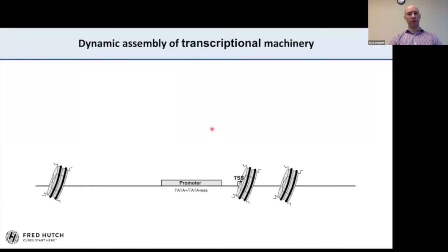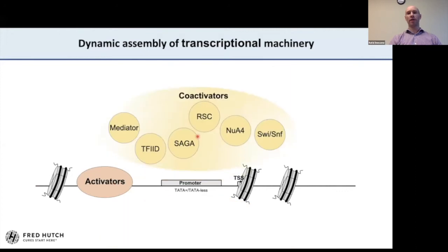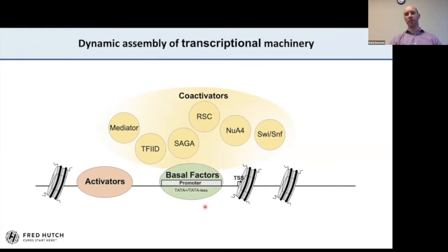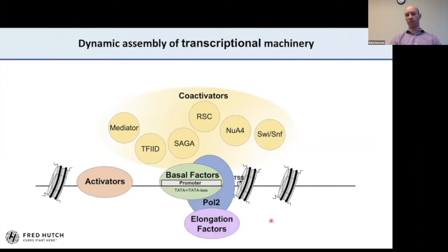Just a few introductory slides. Transcription in eukaryotes starts with activators which bind to upstream activating sequences. They usually recruit coactivator complexes, which can have multiple roles: they can remodel chromatin, introduce post-translational modifications, or nucleate the assembly of the pre-initiation complex. With the help of coactivators, basal factors are loaded to the promoter region, followed by polymerase 2, and transcription begins at the transcription start site. Productive elongation is supported by elongation factors associated with polymerase.